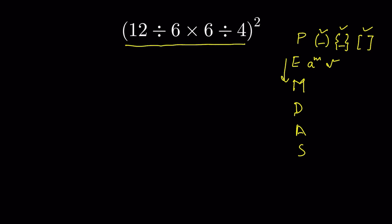We have to solve the operations inside the parenthesis first, and within parenthesis we will also follow this order of operations. There are no exponents inside — the exponent is outside the parenthesis — but first you need to solve the parenthesis. So we will solve the operations inside the bracket: 12 divided by 6 times 6 divided by 4.